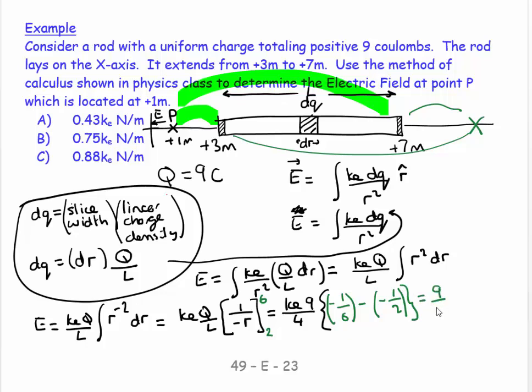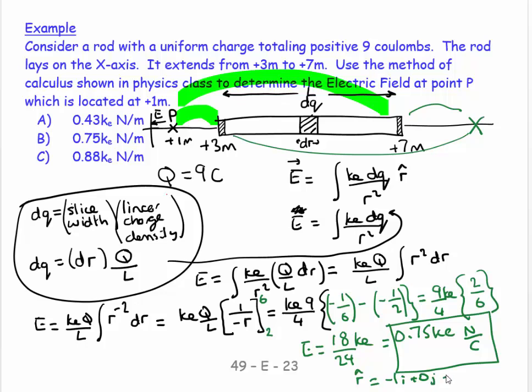This is going to be minus 1 over 6 minus minus 1 over 2, which equals 9 over 4 ke. And this is going to be 3 over 6 minus 1 over 6 is going to be 2 over 6. E equals 0.75 ke newtons per coulomb. And this direction. Looking at the way I've drawn the diagram with the assumption I made about positive charges, my r hat would equal minus 1i plus 0j plus 0k.